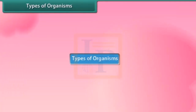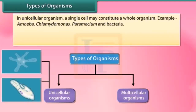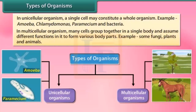Types of organisms: unicellular organisms and multicellular organisms. In unicellular organisms, a single cell may constitute a whole organism. Examples include amoeba, Chlamydomonas, Paramecium and bacteria. In multicellular organisms, many cells group together in a single body and assume different functions in it to form various body parts. Examples include some fungi, plants and animals.